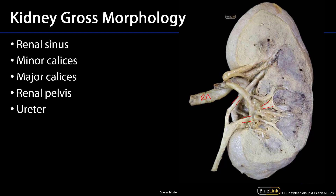The excretory pathway begins with the minor calyces. You can see two very nice minor calyces surrounding a renal papilla here. These coalesce into major calyces — generally there are three or four minor calyces per major calyx, and two to three major calyces per kidney. Where the major calyces coalesce is the renal pelvis, which is contiguous with the ureter. The ureters conduct urine down through the retroperitoneum into the pelvic cavity and through the wall of the urinary bladder.